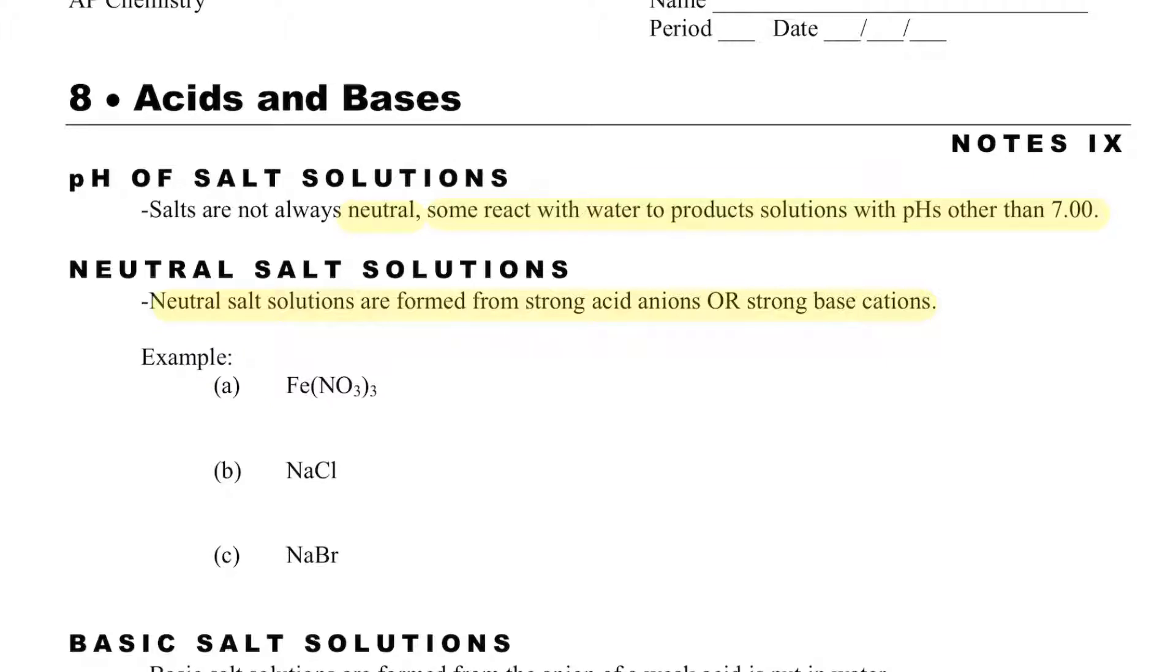But what I can do is I can look at this iron 3 nitrate in example A and I can see HNO3. So I see the HNO3, and that is a strong acid. And so what I know is that strong acids will give me neutral solutions.